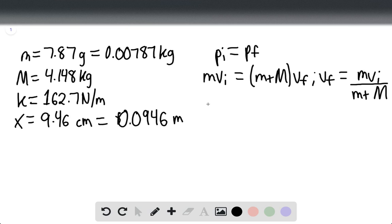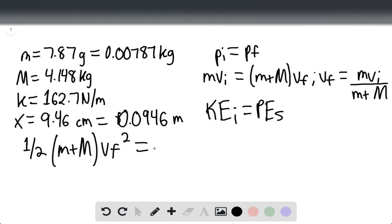We can say that the kinetic energy initial equals the potential energy stored within the spring. So 1/2 (M + m) v_final squared equals 1/2 k x squared.